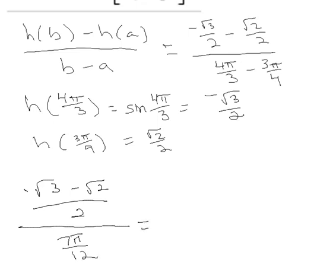And then when you have a fraction over a fraction, you're going to write it horizontally. So this is negative square root of 3 minus square root of 2, all over 2, times 12 over 7π. So we just flipped and multiplied there. And then the 2 will cancel with the 12 and it'll be 6.